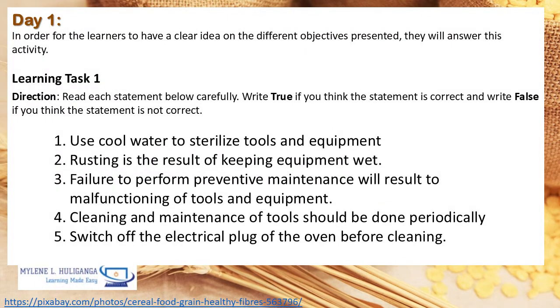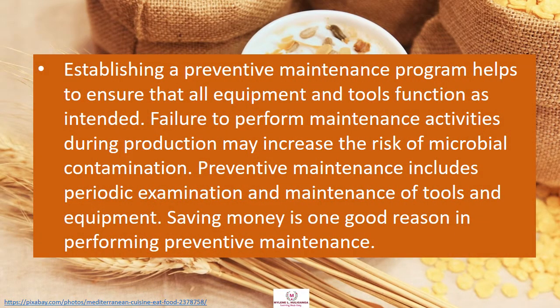In order for the learners to have a clear idea on the different objectives presented, they will answer Learning Task Number 1. Directions: Read each statement carefully. Write true if you think the statement is correct and write false if you think the statement is not correct. Statements: Establishing a preventive maintenance program helps to ensure that all equipment and tools function as intended. Failure to perform maintenance activities during production may increase the risk of microbial contamination. Preventive maintenance includes periodic examination and maintenance of tools and equipment. Saving money is one good reason in performing preventive maintenance.